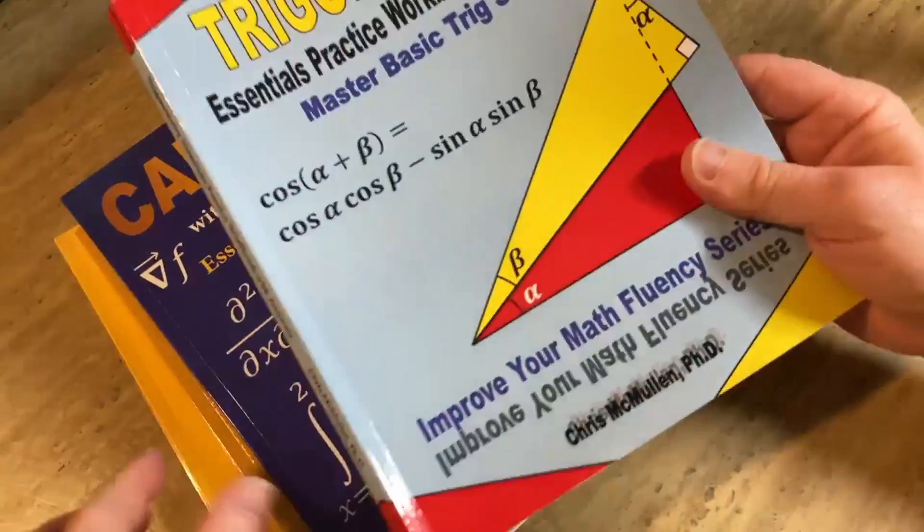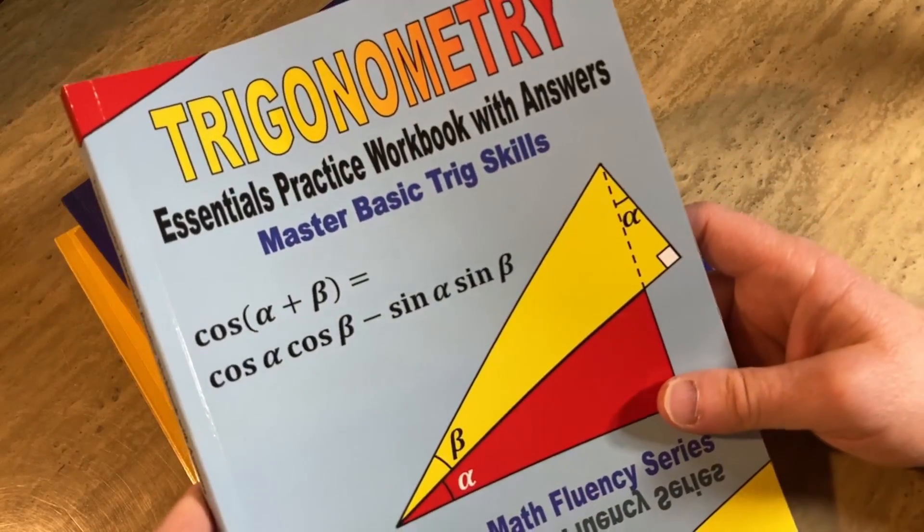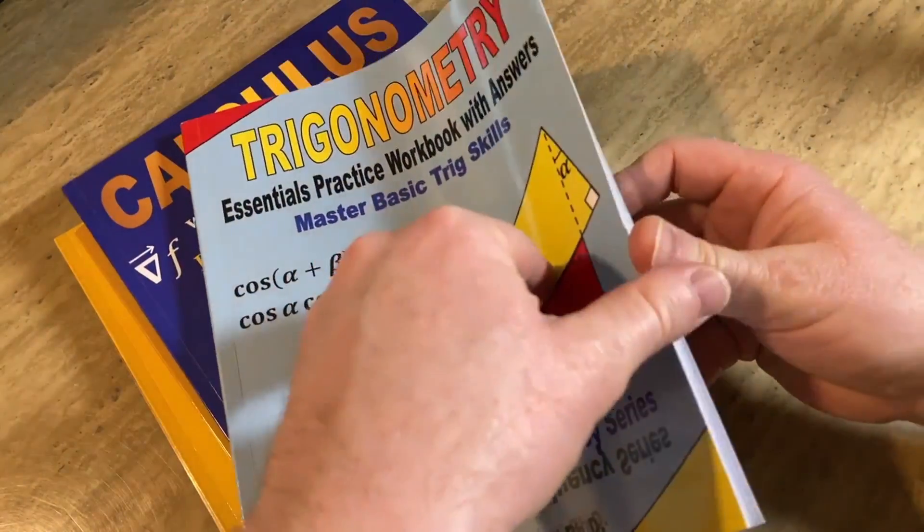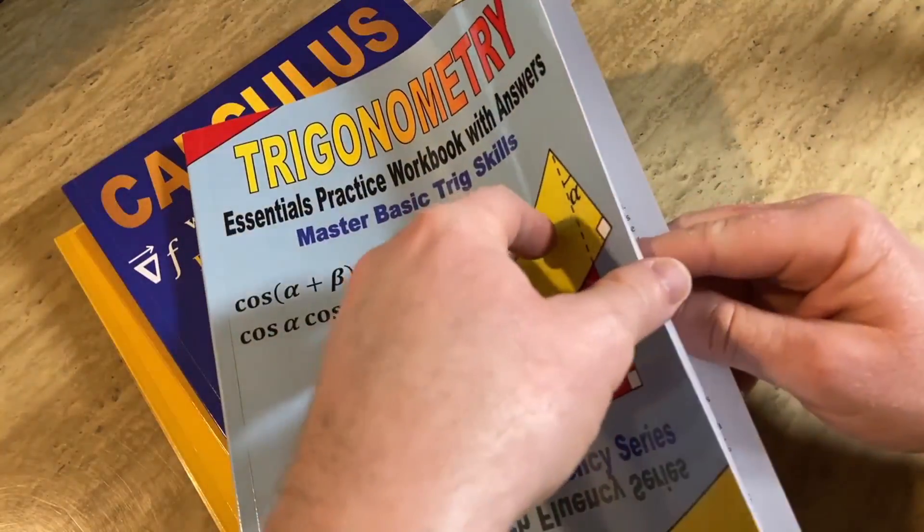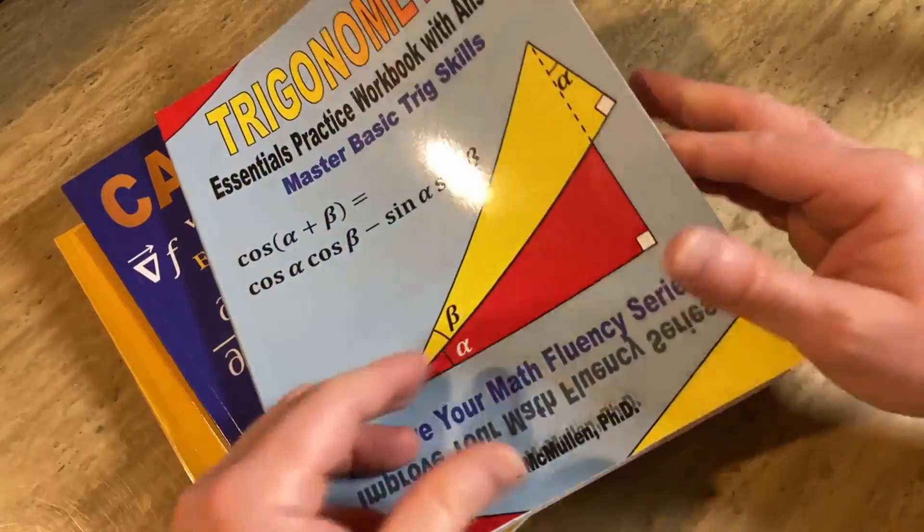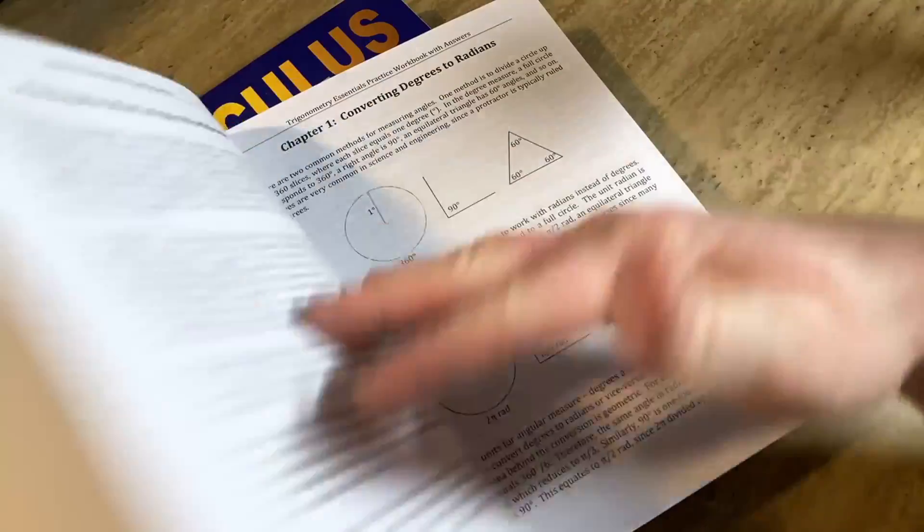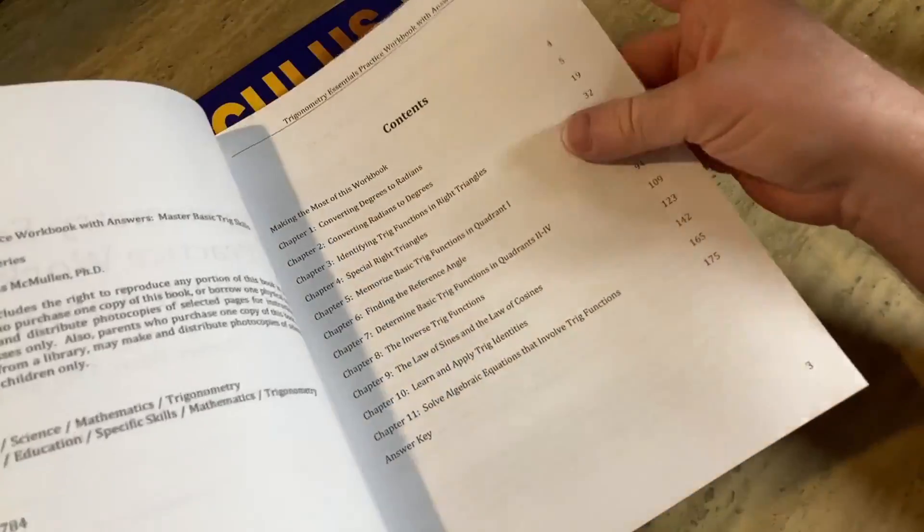It's called Trigonometry Essentials Practice Workbook with Answers, and the author again is Chris McMullen. And these are workbooks, so that's something else that's unique about these - you actually write in these, you take a pen or a pencil and you can write in the book. Let's just look at the contents, that's the most important thing.